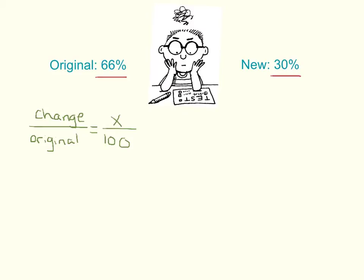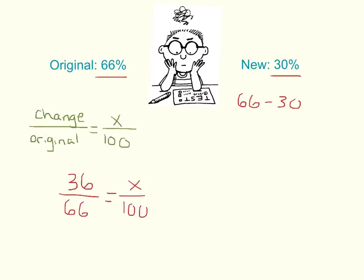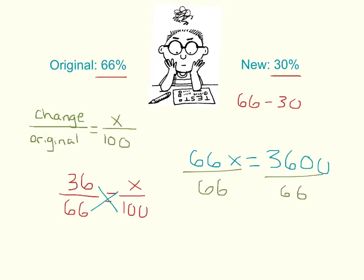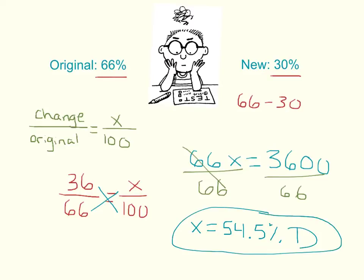From 66 to 30, if you subtract, there was a change of 36 — it went down 36. The original is 66, so we have 36 over 66 equals x over 100. Cross multiply: 66 times x equals 100 times 36, which is 3600. Divide both sides by 66, which equals 54.5%. It is a decrease — a 54.5% decrease. I hope that never happens to anyone in this class!